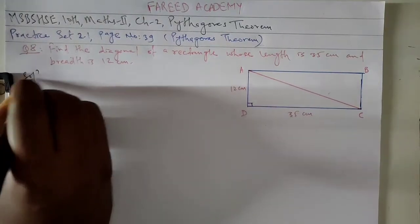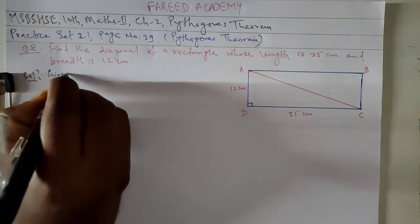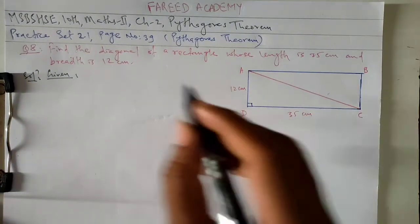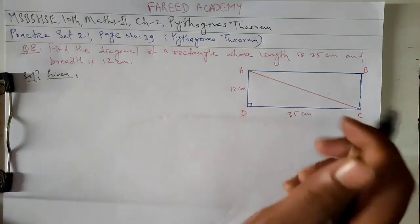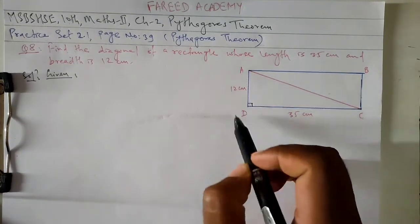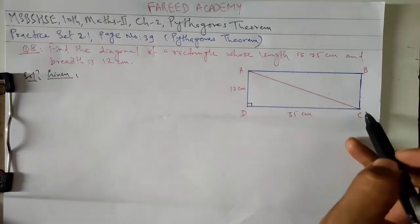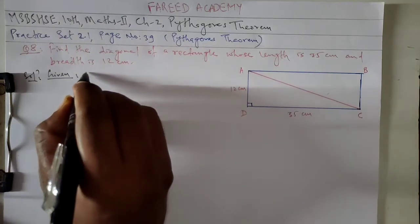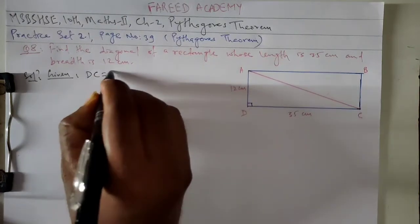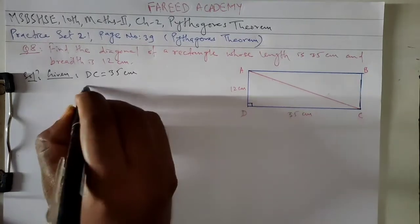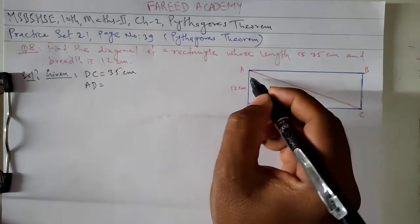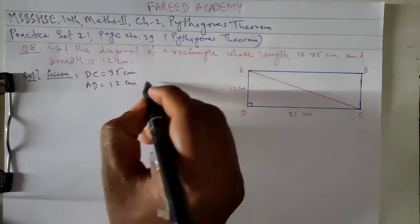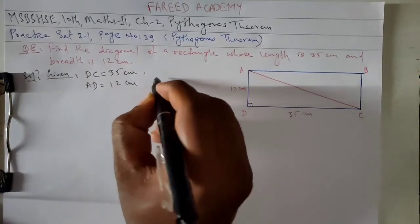We will write given here. We will consider one triangle, either ADC or ABC. I have taken ADC. DC is 35 cm, AD is 12 cm. Now you can find AC.